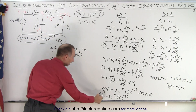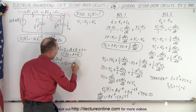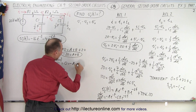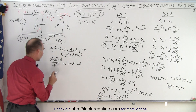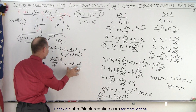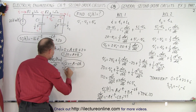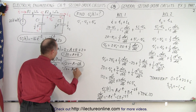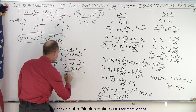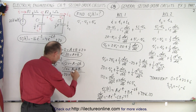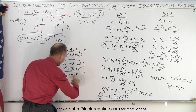Setting that equal to the derivative expression at time zero, we end up with minus A minus 6B equals zero. That's our second equation. Now we add the two equations together: minus 20 equals A plus B, and minus A minus 6B equals zero. Adding them, we get minus 20 equals negative 5B.